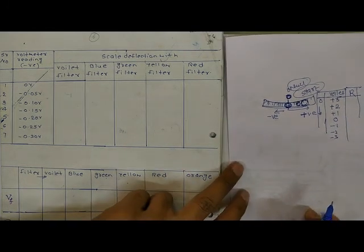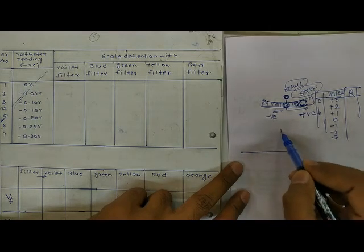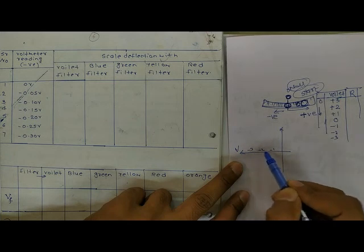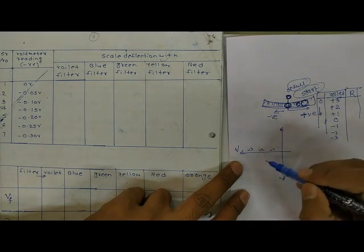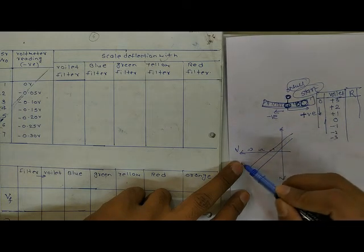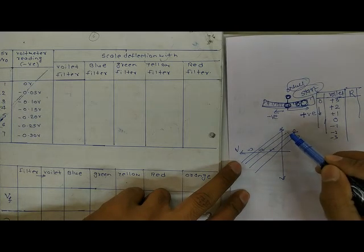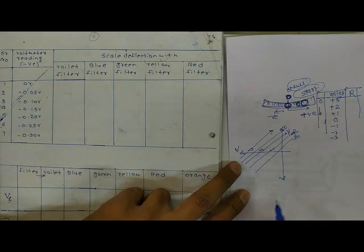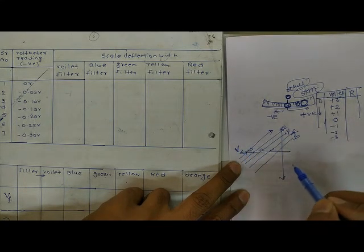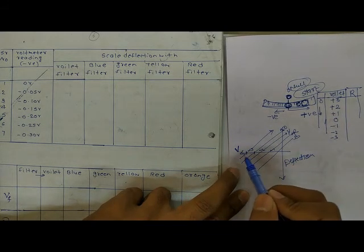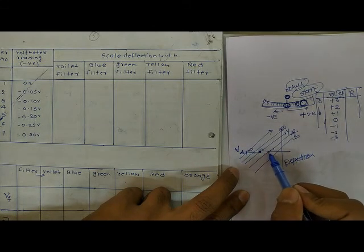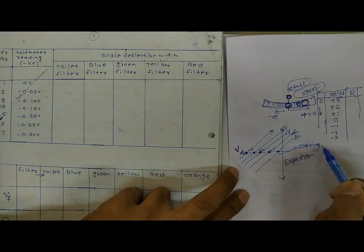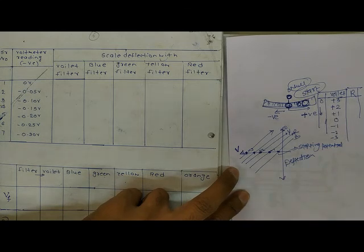Once you have these readings, draw the first graph. The voltage axis is negative, so voltages go to the left from center. Plot deflection on the y-axis and voltage on the x-axis. For each colour we get a line. We will find 5 lines — for red, blue, yellow, orange, and the remaining colour. Each line crosses the x-axis (voltage axis), and that crossing point is called the stopping potential, corresponding to that colour and frequency.